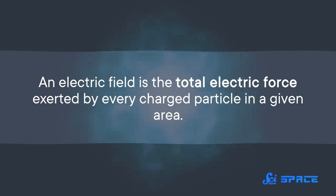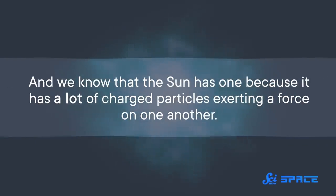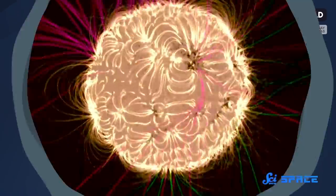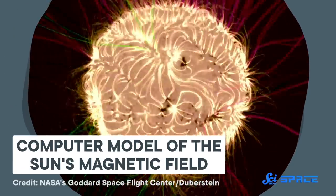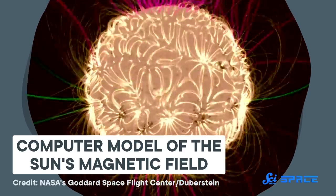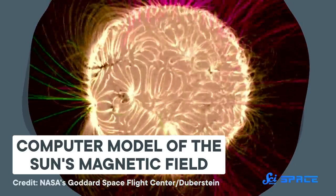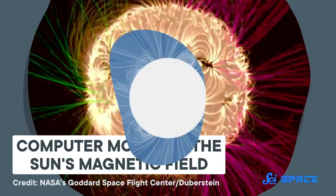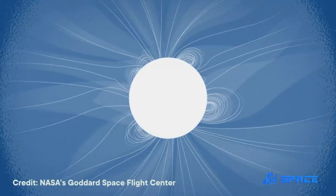An electric field is the total electric force exerted by every charged particle in a given area. And we know that the Sun has one, because it has a lot of charged particles exerting a force on one another. They're mostly protons and electrons that result from hydrogen atoms splitting apart. And all of these particles are superheated because it's the Sun. That heat makes them rush outward towards space. And since electrons are way lighter than protons, they're more likely to escape the Sun's gravity. But all of these separated electrons and protons are still pulling on each other, which sets up an electric field around the Sun.